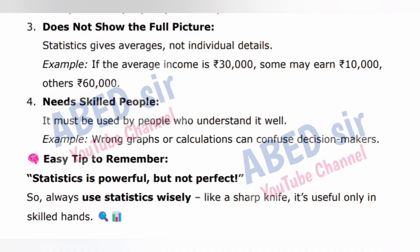Limitation 4: Needs skilled people. It must be used by people who understand it well. Example: Wrong graphs or calculations can confuse decision makers. Easy tip to remember: Statistics is powerful but not perfect. So always use statistics wisely — like a sharp knife, it's useful only in skilled hands.